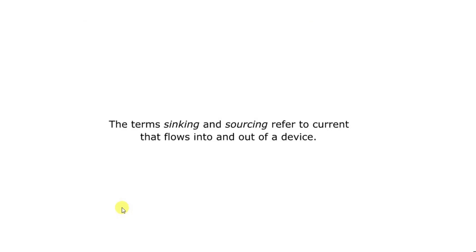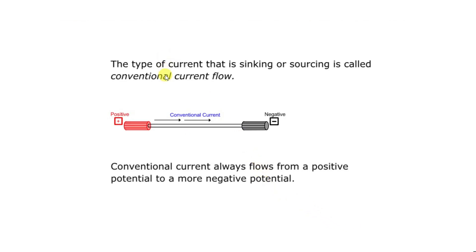In today's lecture we'll be discussing sourcing and sinking concepts in PLCs. Sinking and sourcing concepts relate to the direction of current flow. Current flows from higher potential to lower potential — from positive terminal to negative terminal. This is called conventional current flow, which always flows from positive potential to negative potential.